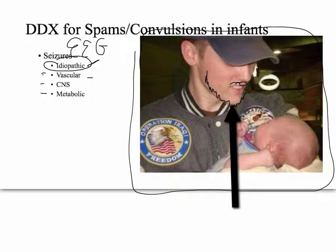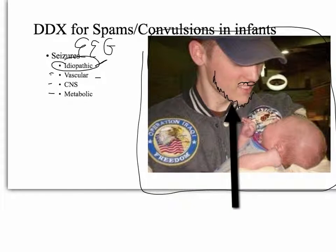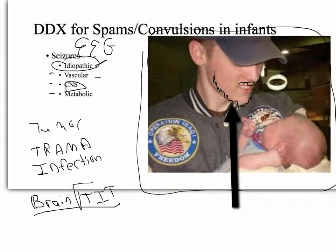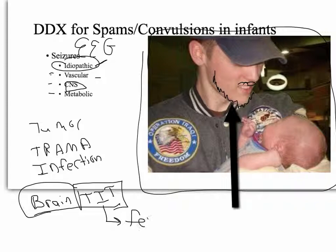Moving on to brain and CNS causes: we're looking at a tumor, trauma, or infection. A mnemonic you might use is 'brain TIT.' Infection includes a lot of things — encephalopathies, and also just a fever, so you can have a febrile seizure.